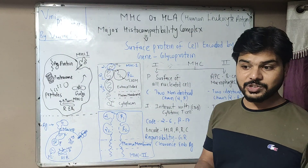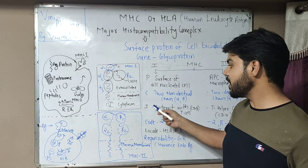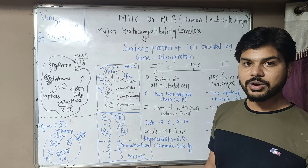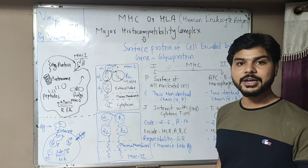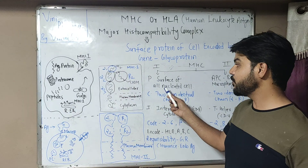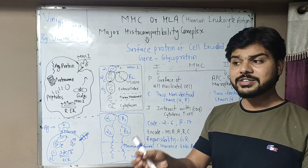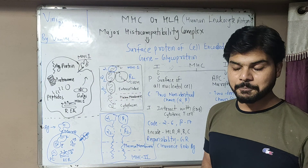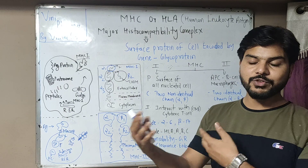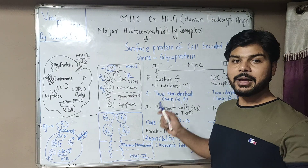Now let us talk about the classes of MHC. Here is a simple trick. MHC Class 1 complex is present on the surface of all nucleated cells. There are some exceptions like nerve cells and RBCs, where it is not present.